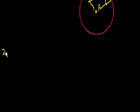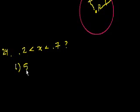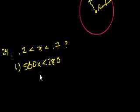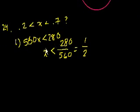Problem 24. Is the number x between 0.2 and 0.7? So: is 0.2 less than x less than 0.7? Statement 1 tells us 560x is less than 280. You don't even have to solve this — it's a simple inequality, you can easily solve for x. And if you can solve for x, you can answer whether x falls in that range. You could divide both sides by 560, which gives x less than one-half, but that takes valuable time on the GMAT.